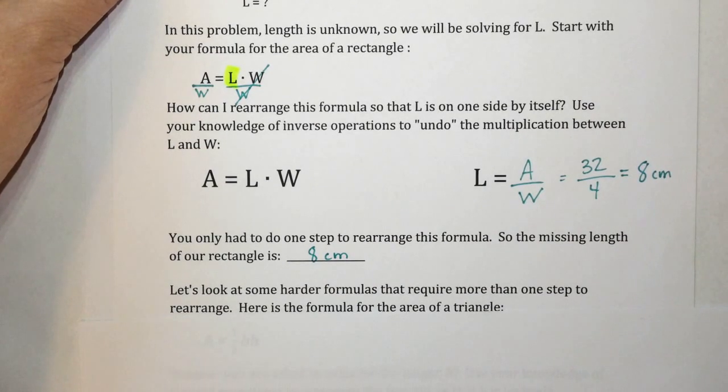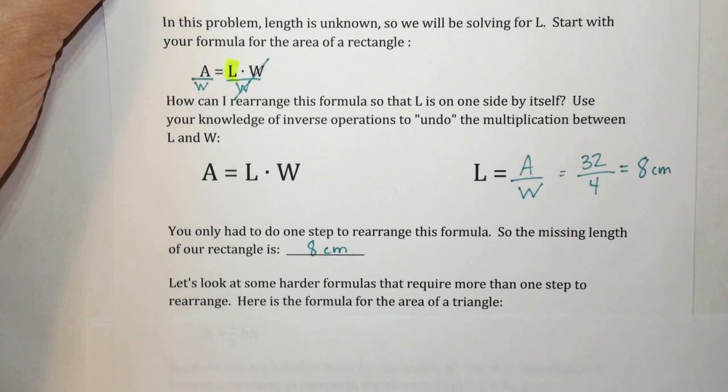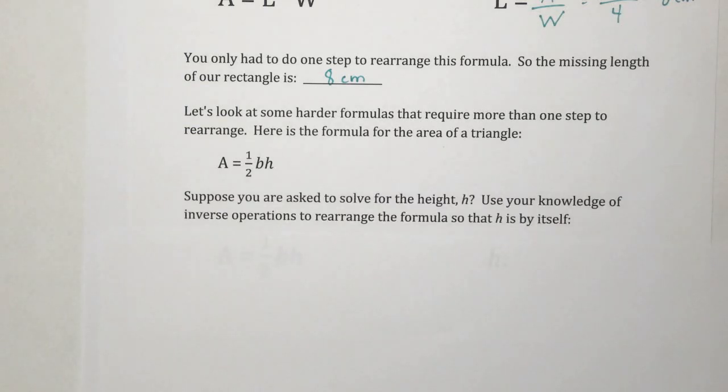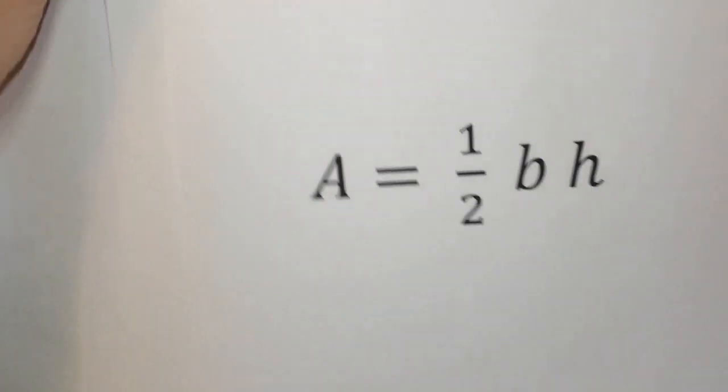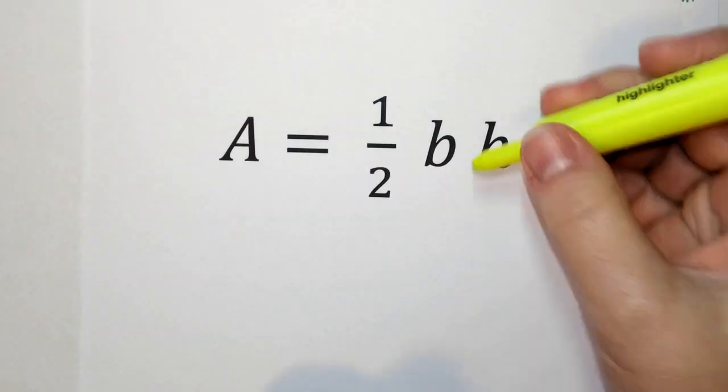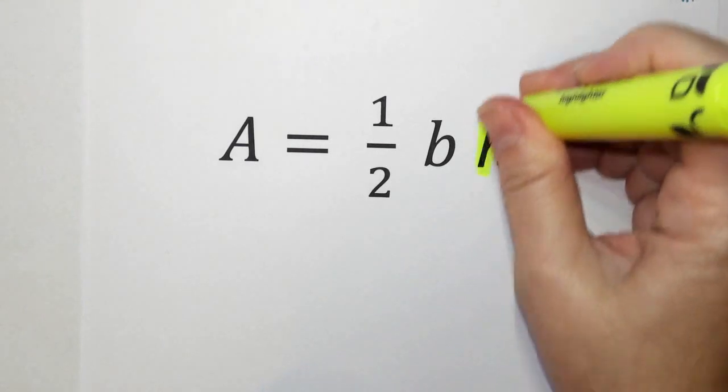Now let's look at some harder formulas that require more than one step to rearrange. Here is the formula for the area of a triangle. A equals 1 half BH. Area equals 1 half base times height. Suppose you were asked to solve for the height, which is H. Use your knowledge of inverse operations to rearrange the formula so H is by itself. I'm going to put that on a larger piece of paper to make it easier to work with. We know we want to solve for H. Let's highlight that. That's going to be our target, our subject.